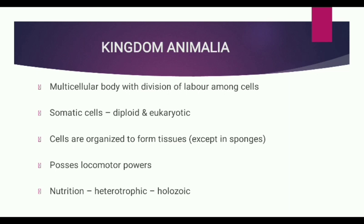Kingdom Animalia comprises multicellular, diploid, and heterotrophic eukaryotes which pass through a blastular stage in their embryonic development. The body is multicellular, they have two sets of chromosomes (diploid), heterotrophic nutrition, and are eukaryotes. They pass through a blastular stage in embryonic development.